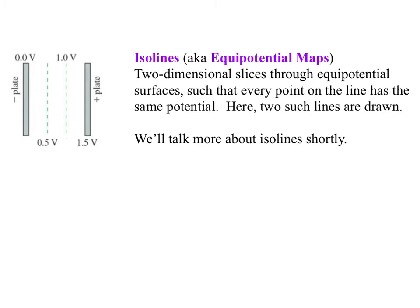And then one other way of representing things are what are called iso lines or equipotential maps. Your textbook likes equipotential map, and the AP committee loves iso lines. They're like, it just sounds cool and Star Trek-y. So they use it a lot. An iso line is a two-dimensional slice through an equipotential surface such that every point on the line has the same potential. So it's each line here is now drawing the same potential. Again, for a parallel plate capacitor, since being at a value of X is all that matters, anywhere on this line is the same potential. Anywhere on this line is the same potential, although these two are different. We'll talk more about iso lines in their own little section shortly.